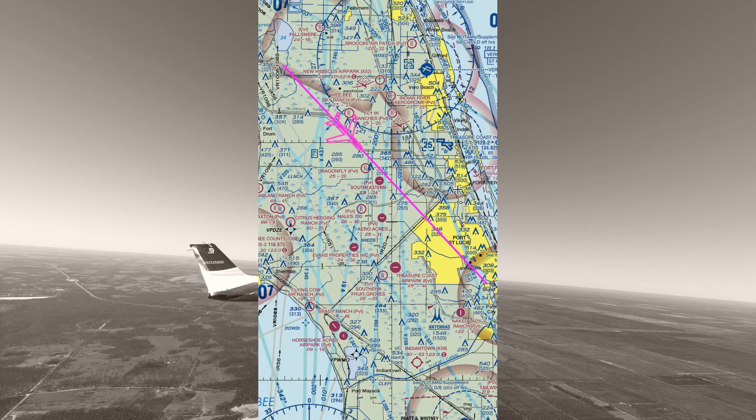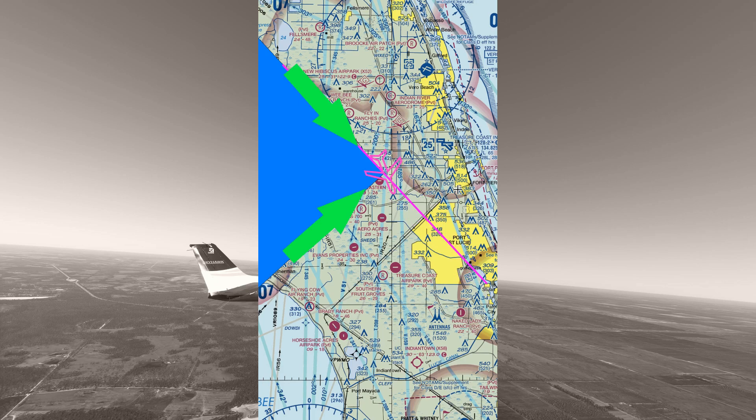So with this one we know we're tracking 130 degrees over the ground but the heading is slightly off to the right of the ground track. That means a crosswind component from the right. We also know that the ground speed is greater than the true airspeed which means that the wind is coming from behind.